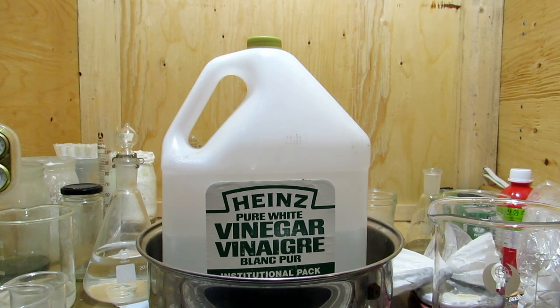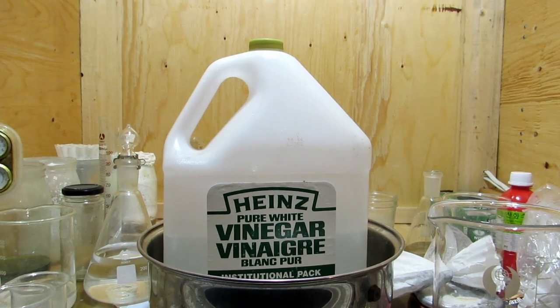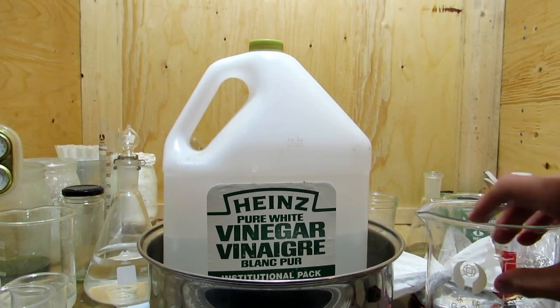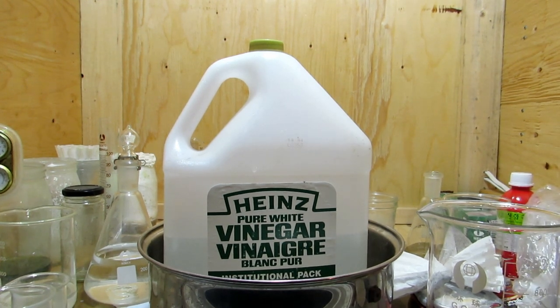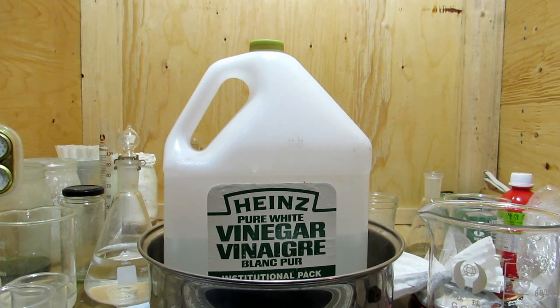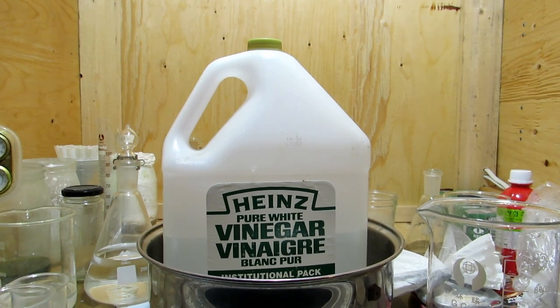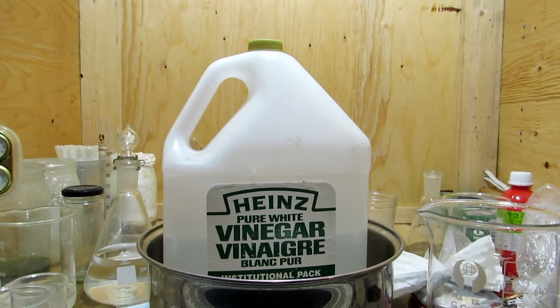So we are going to start by measuring out several liters of vinegar. I will be using this beaker, keeping track of exactly how many liters I use, and that will correspond to how many grams of baking soda that we add to that in the neutralization reaction. So I will measure all that out first, and then I will meet you back.